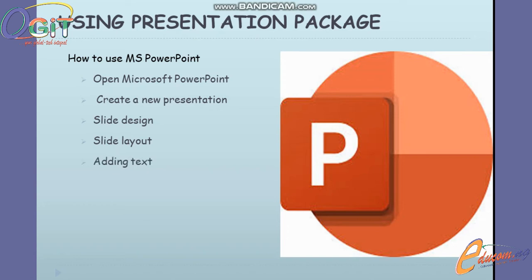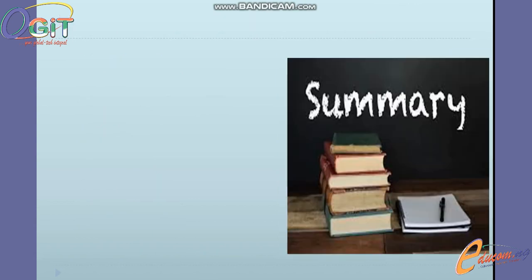This is followed by adding text, then adding pictures to our slides. We also need to add animation to our content — this determines how the text is going to look or appear in front of the audience. This is followed by adding transitions, which are applied to our slides to define how each slide is going to appear when played in front of the audience.